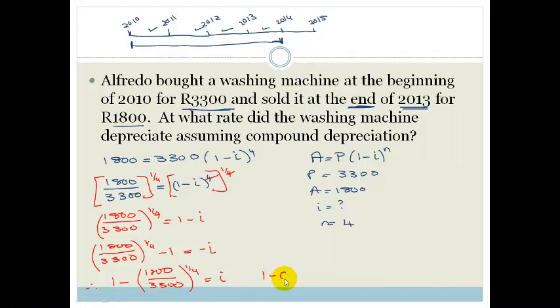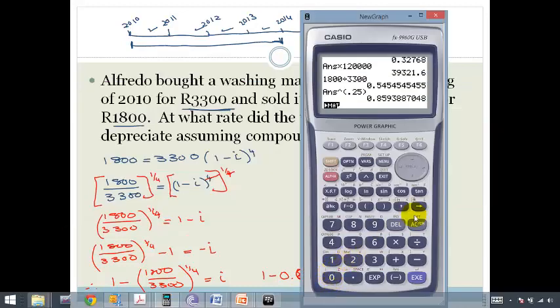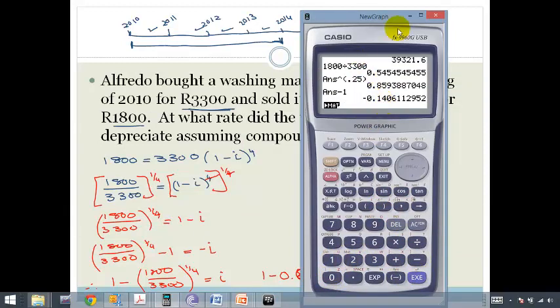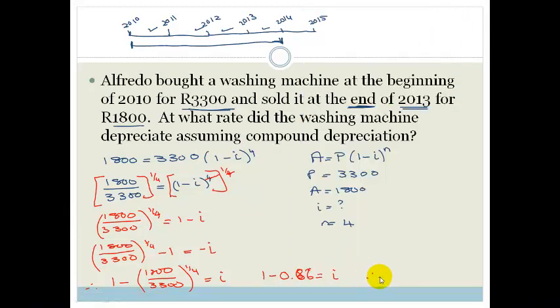So we've got 1 minus 0.8686 is equal to I. So then we're going to go back to our calculator and we're going to subtract 1, and we're going to get 0.14. Therefore, I is 0.14, which is 14% per annum. So that is how much Alfredo's washing machine was depreciated.